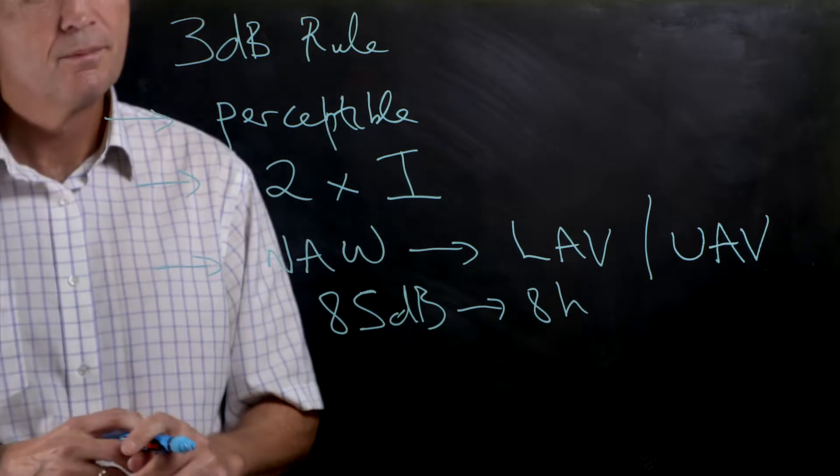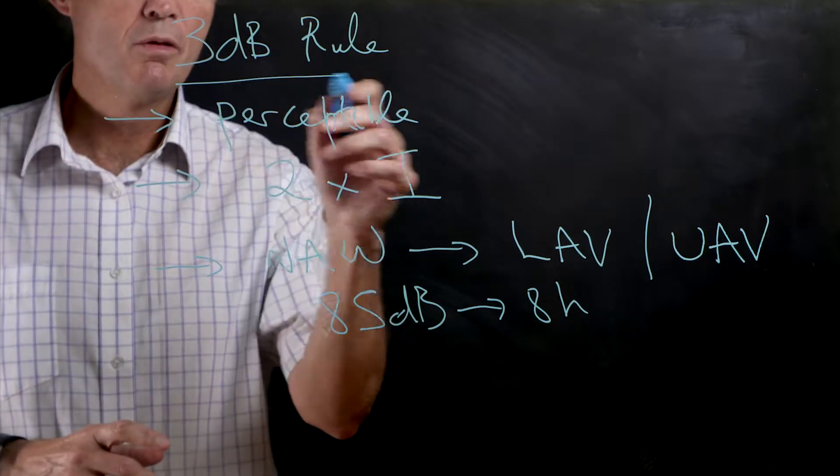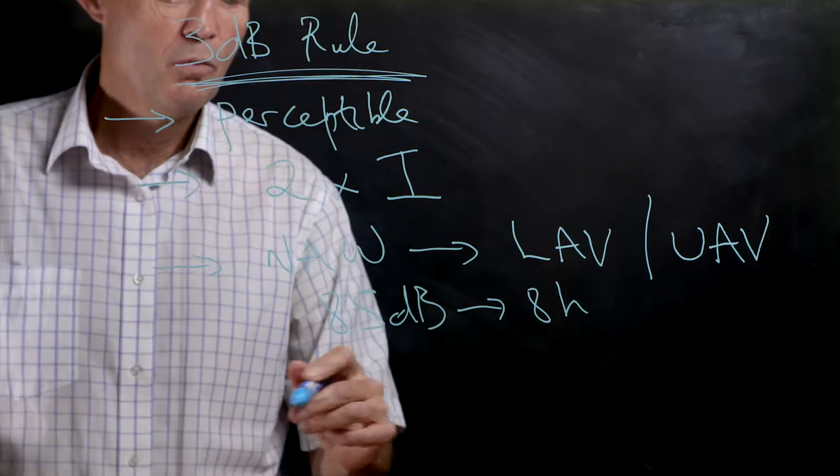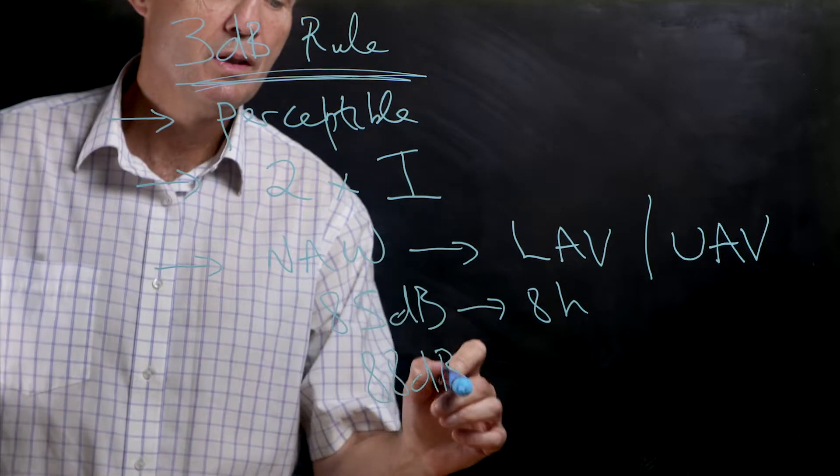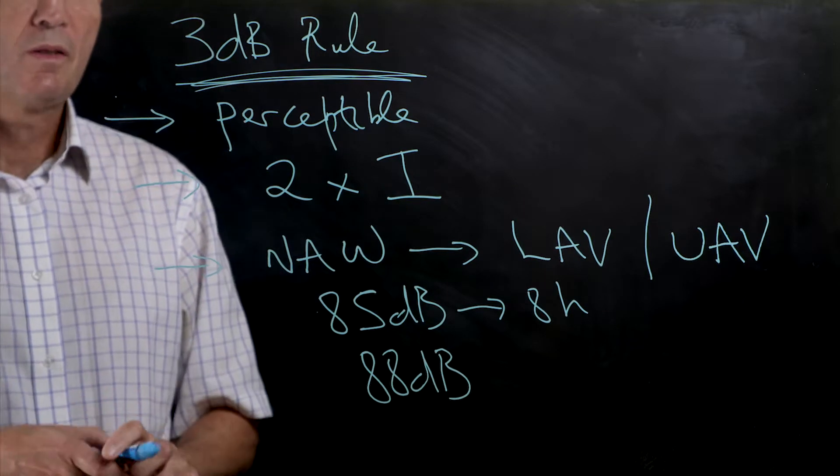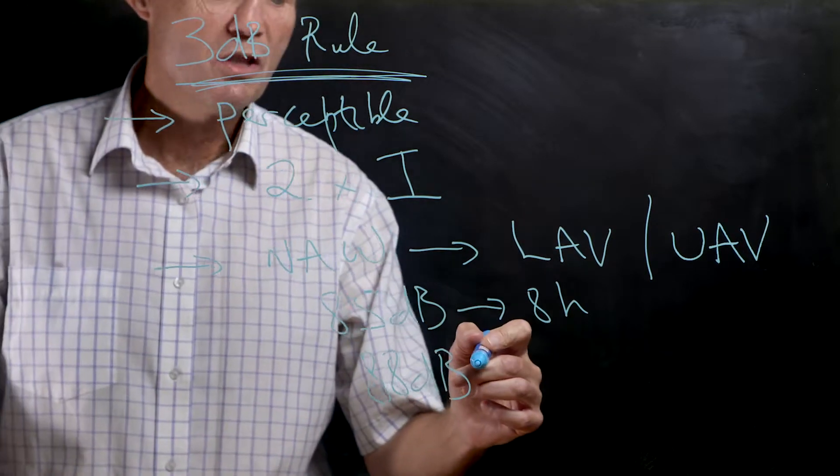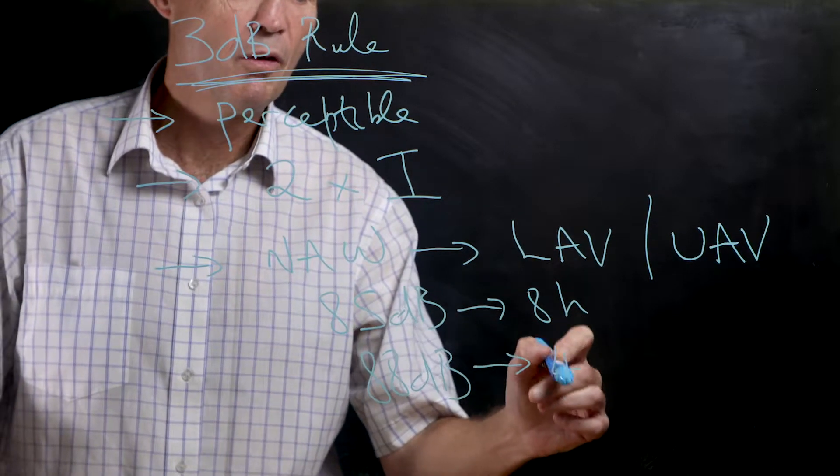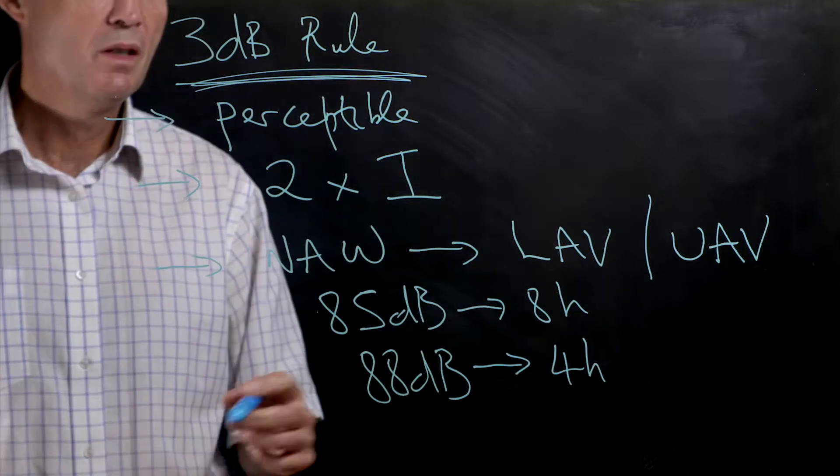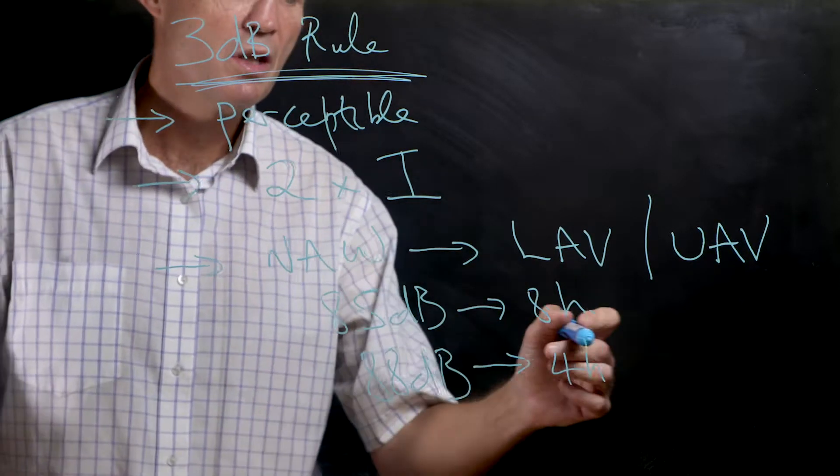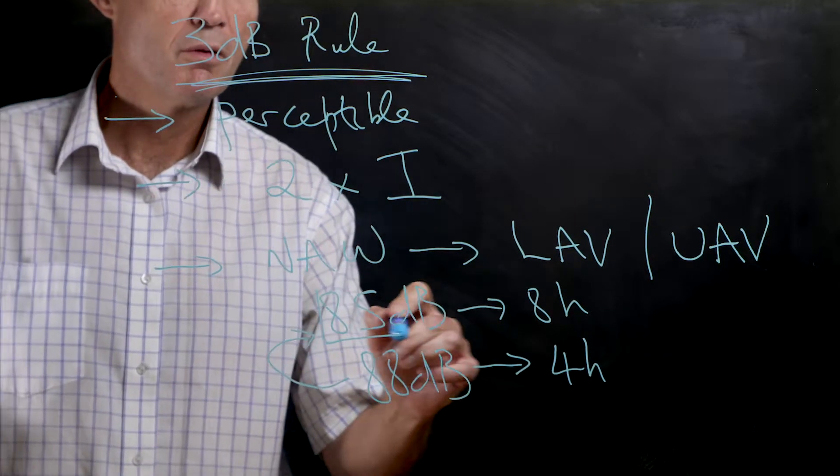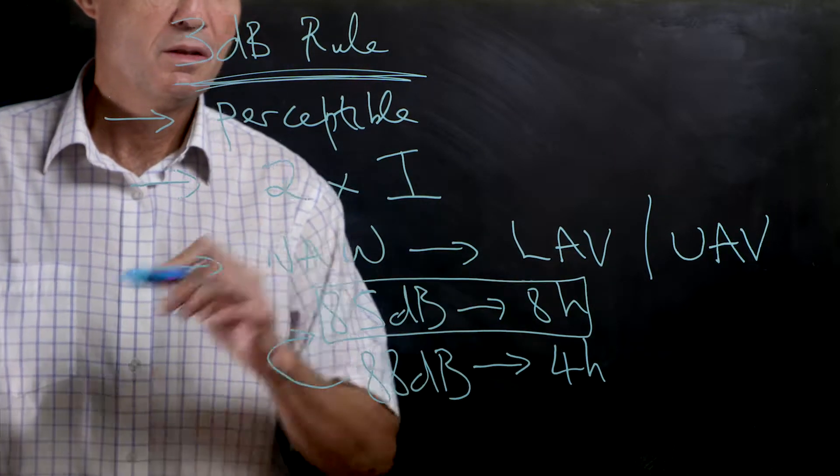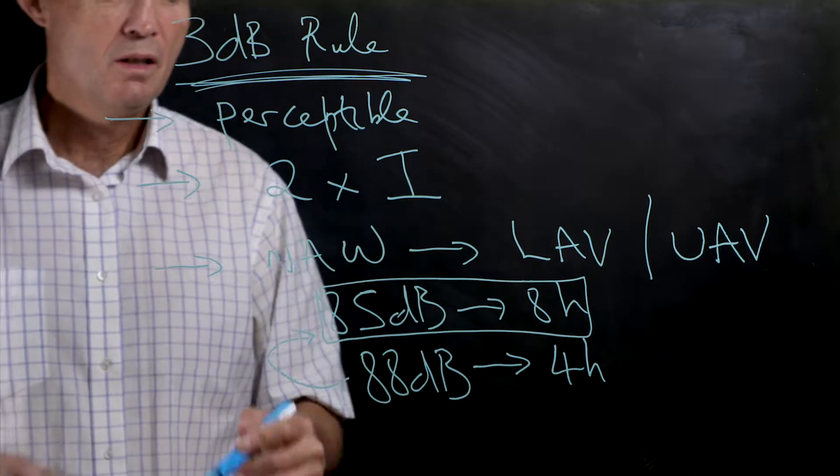Using this 3dB rule, we can increase this level to 88dB for an exposure. This represents a doubling of sound intensity and means we can be exposed to this for four hours. This means that 88dB for four hours is actually equivalent to 85dB for eight hours.